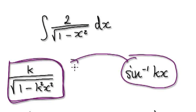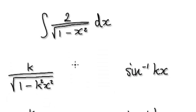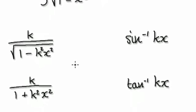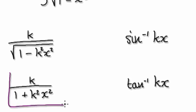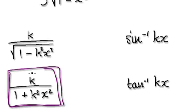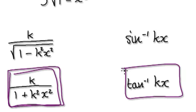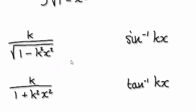Because when you differentiate this, it will give you this. Also, keep an eye out for something of this form here, because when you try and differentiate this here, it will give you this.